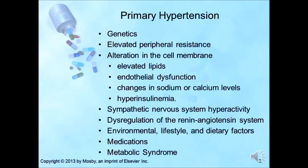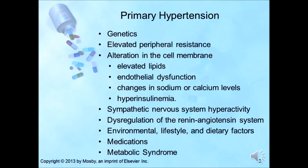The cause of primary hypertension, which accounts for approximately 95% of all cases of hypertension, remains unknown. Although these are not completely understood, many factors have been linked to primary hypertension, including some that are genetically determined. Involved mechanisms include elevated peripheral resistance, alteration in cell membranes related to elevated lipids, endothelial dysfunction, changes in sodium or calcium levels, and hyperinsulinemia. Sympathetic nervous system hyperactivity caused by insensitivity of the baroreceptor reflexes may contribute to hypertension accompanied by tachycardia and elevated cardiac output in younger patients.